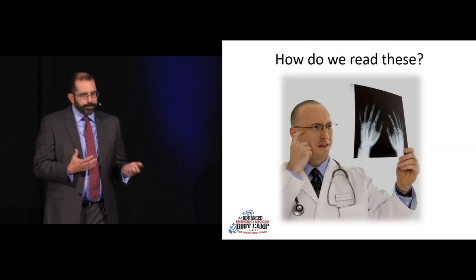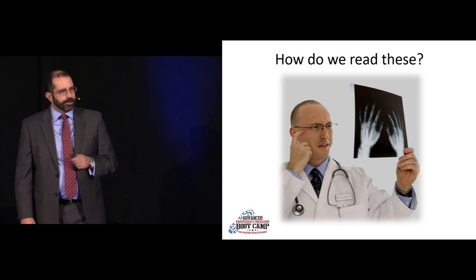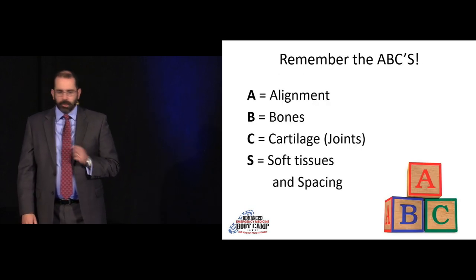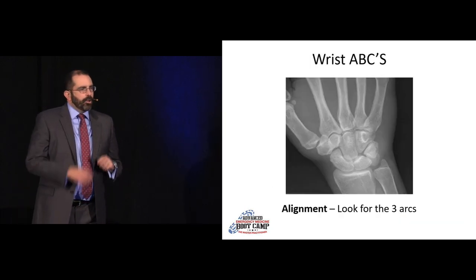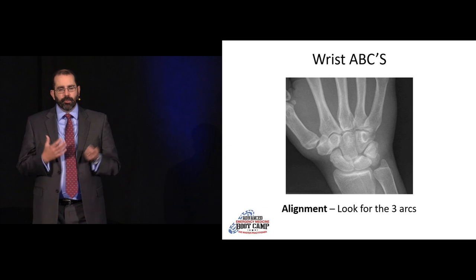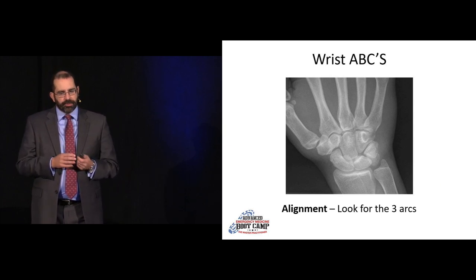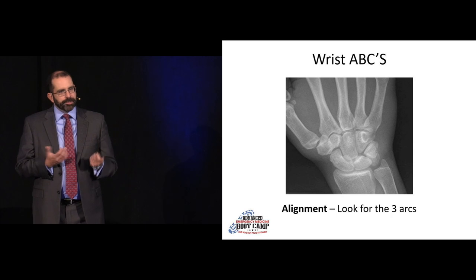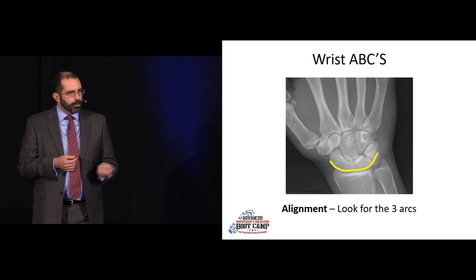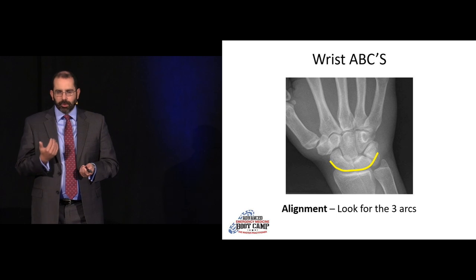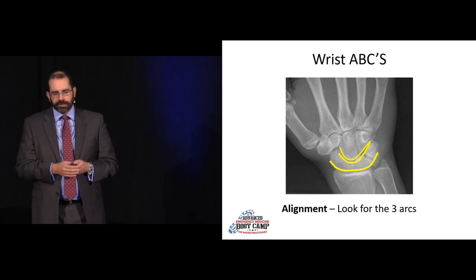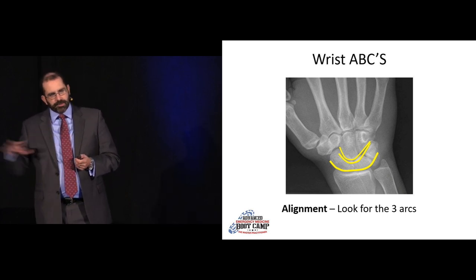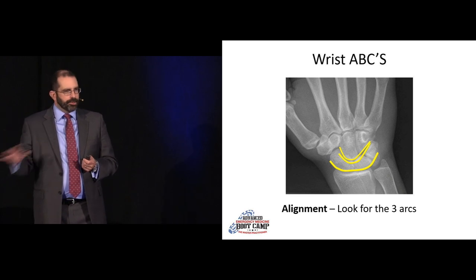How do we read them? Again, ABCS — Alignment, Bones, Cartilage/joint spaces, and Soft tissues and Spacing. Looking at the wrist in terms of alignment, we talk about three arcs formed by the carpal bones: the proximal border of the proximal row, the distal border of the proximal row, and the proximal border of the distal row. They should form nice smooth sweeping arcs — keeping in mind that the pisiform sits outside of that.